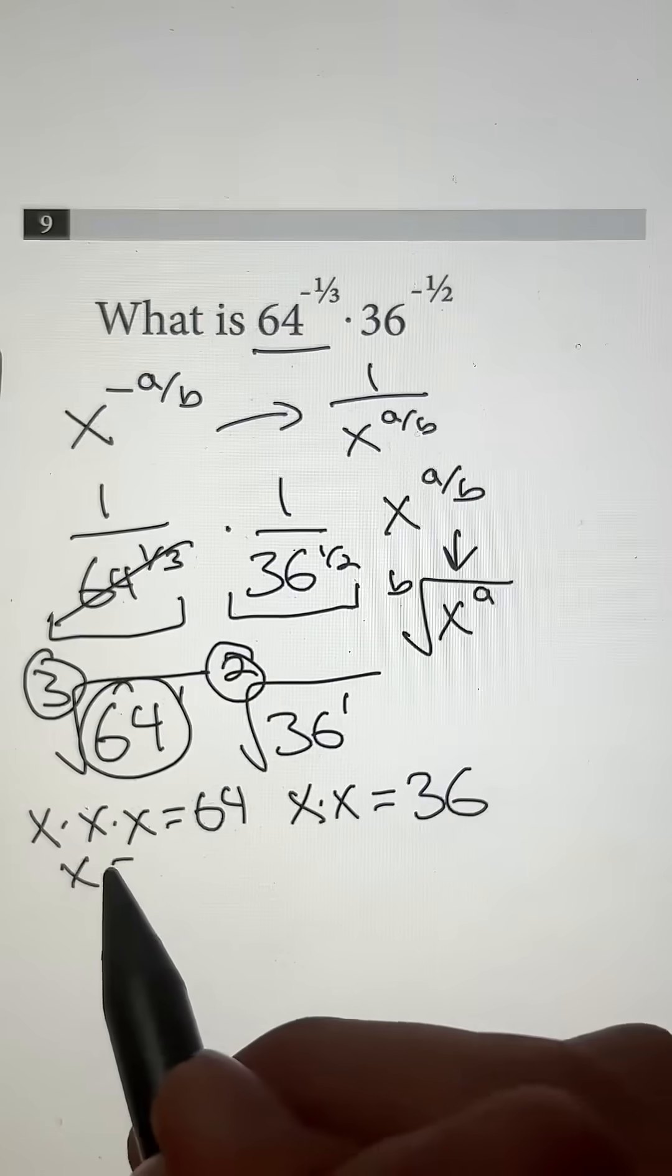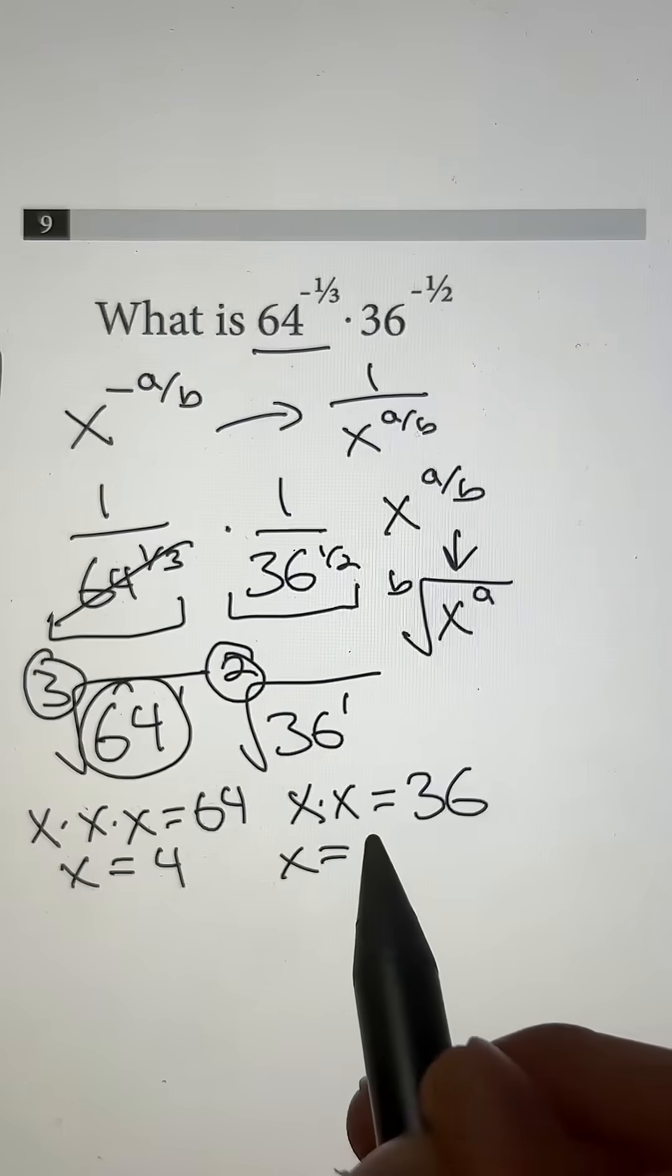For 64, x is going to come out to be four. And for 36, x is going to come out to be six.